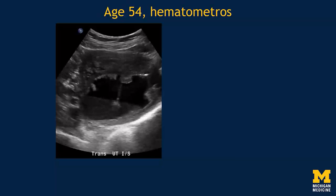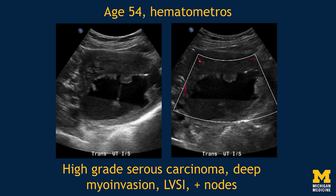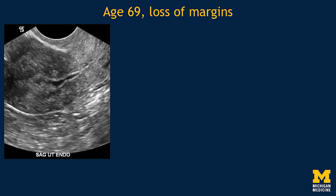Here's another concerning morphology — hematometros, particularly in the setting of irregular soft tissue lining the endometrial canal. Here we see a patient who has both areas of soft tissue studding the canal and a stalactite of blood hanging down into a pool of hemorrhagic material layering dependently within the endometrial canal. We were able to demonstrate some vascularity within this tissue. This was actually a multifocal high-grade serous carcinoma with deep myometrial invasion, lymphovascular space invasion, and positive nodes — again, that serous carcinoma type 2 can be really aggressive.